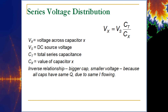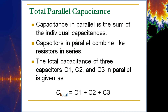Because capacitors in series are calculated reciprocally, the voltage distribution across series capacitors looks like current division for parallel resistors — C_total divided by the individual capacitor. The total capacitance is always smaller than any individual capacitor. For parallel capacitors it's the opposite: simply add them all together, just like resistors in series. This is completely opposite to how you handle resistors in series and parallel.